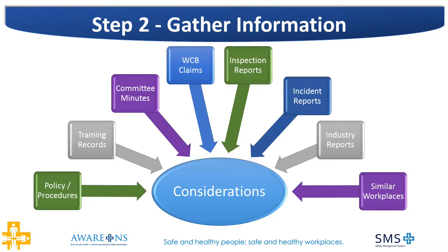Some of the suggested information that the tool lists include: security and safety checks, existing policies, procedures or work practices, feedback from company suggestion boxes, incident reports, accident investigations, training records, minutes from committee meetings, community information, violence in similar workplaces, workplace inspection reports, and workers' compensation board claims. This list is only a suggested list; the assessment team will need to determine which areas they will consider and whether they wish to add any additional considerations.